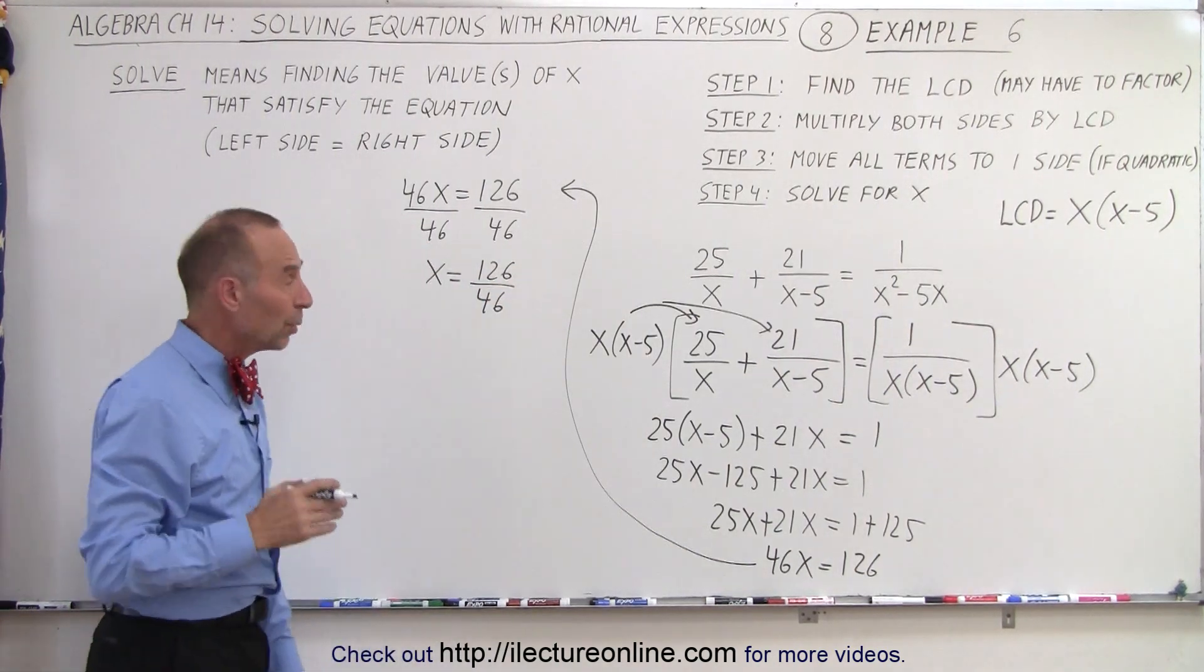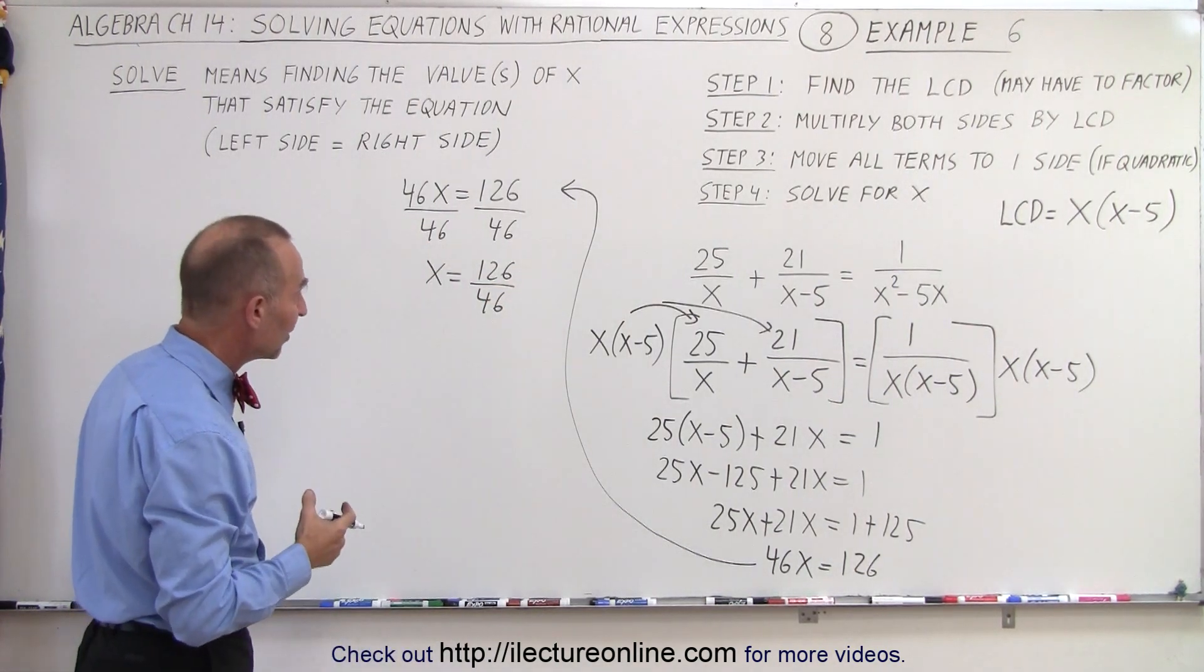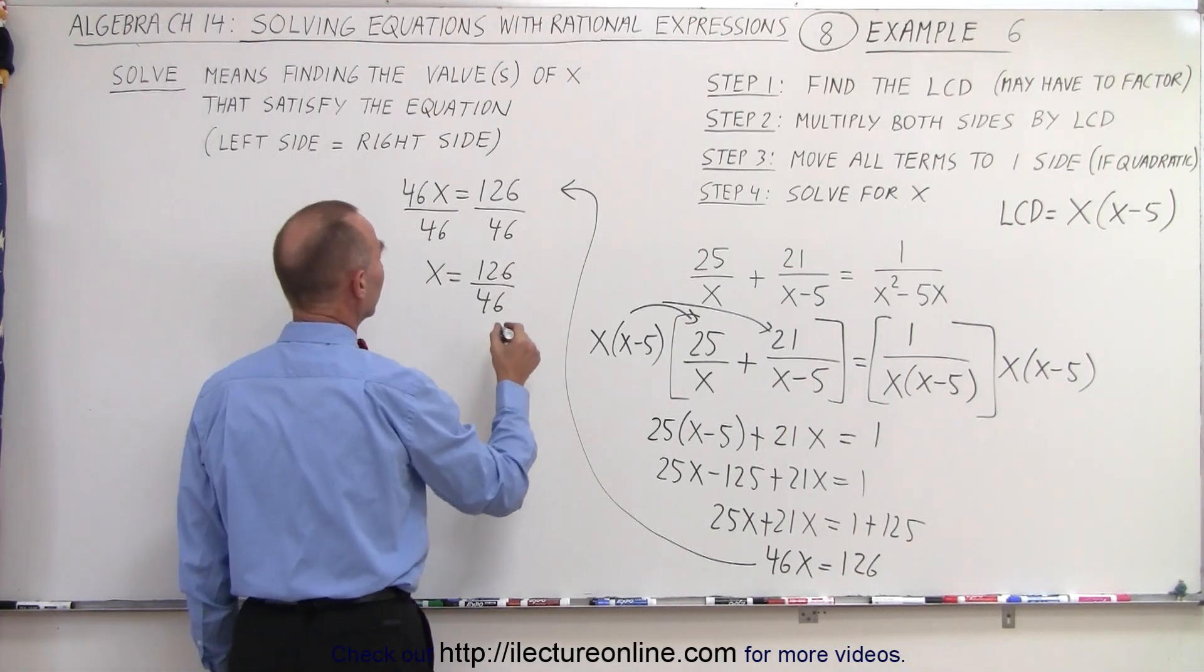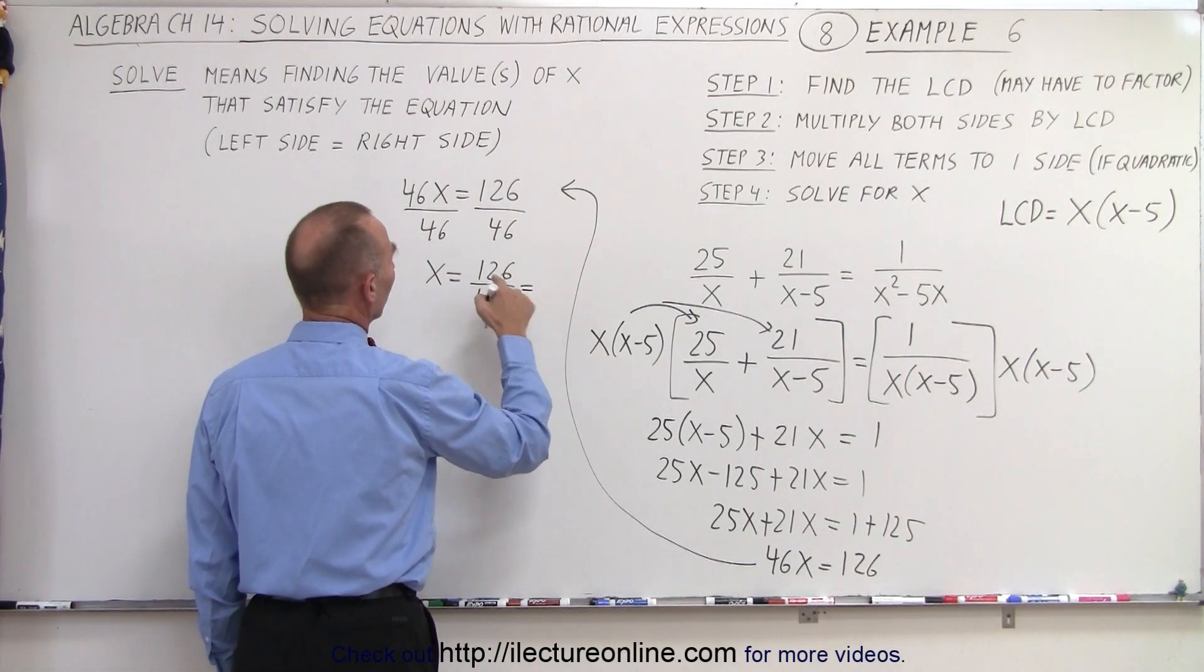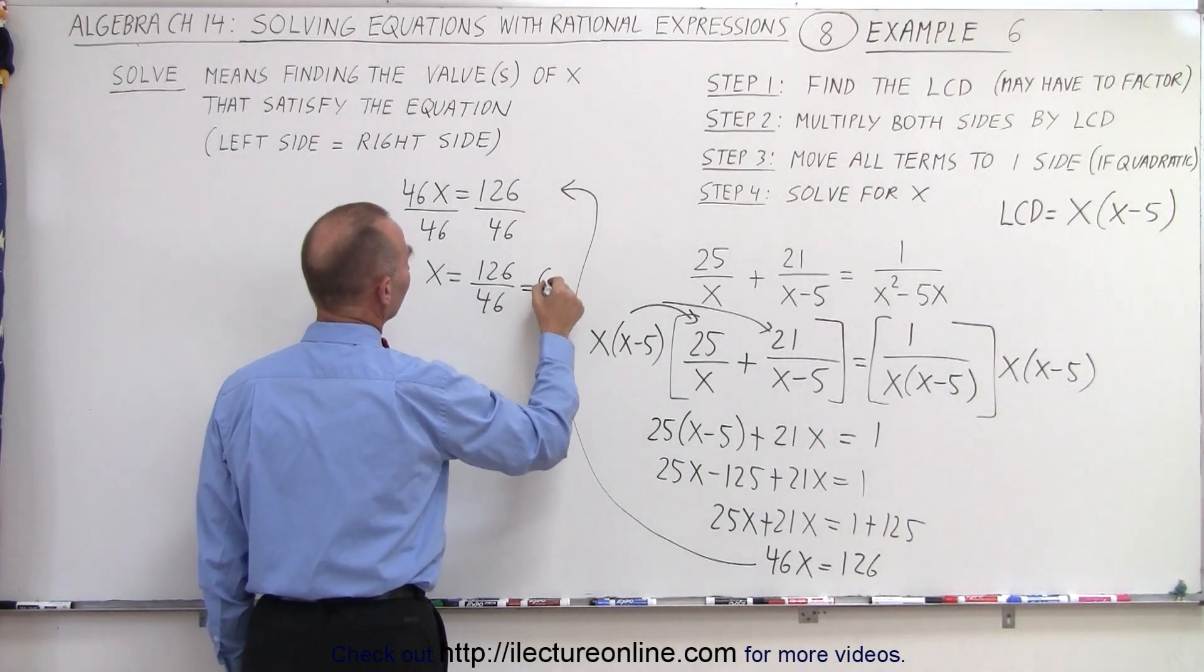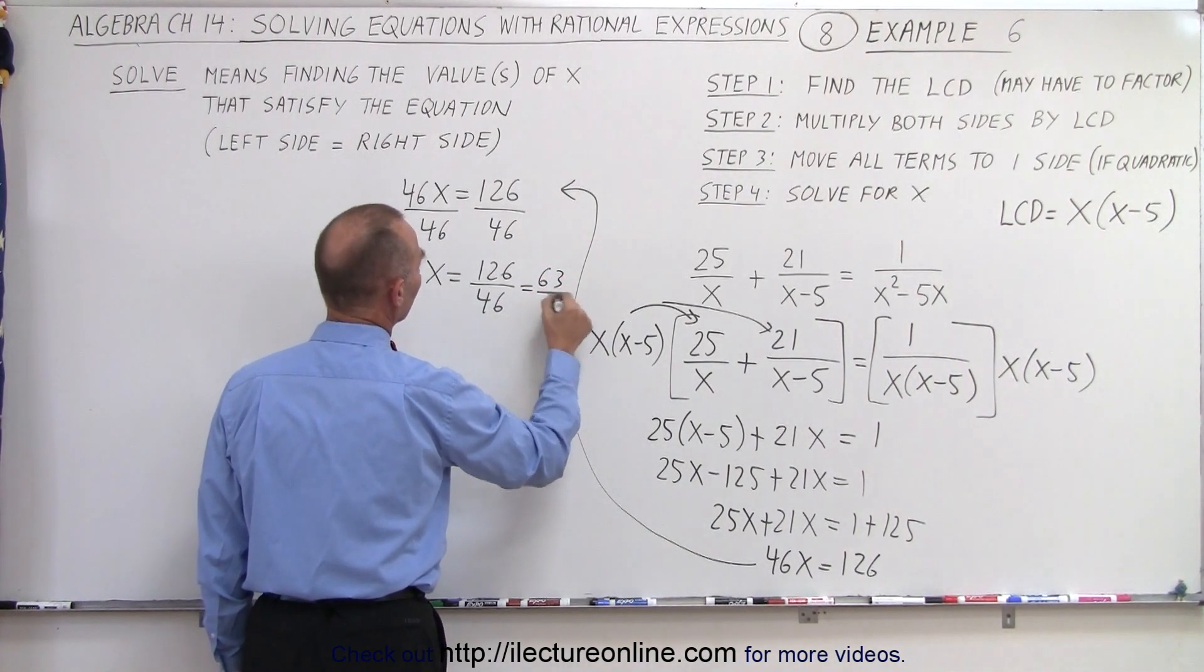Well, first of all, they both end in a 6, so that means they are even. That means they can be divided by 2. And so that means 126 divided by 2 would be 63, 46 divided by 2 would be 23.